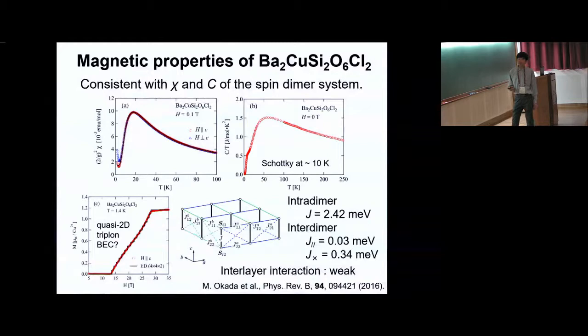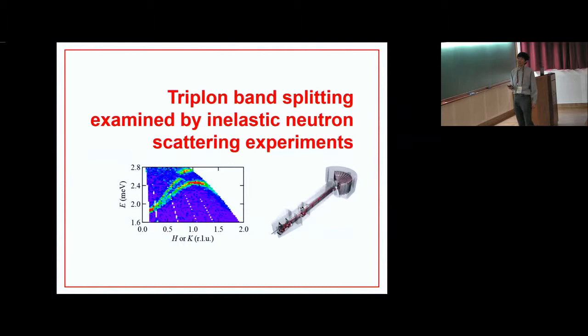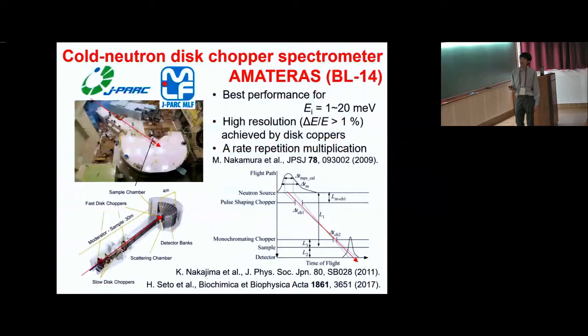Inelastic neutron scattering experiments were originally performed to confirm these expectations experimentally. The experiments were performed at J-PARC using the cold neutron disk chopper spectrometer AMATERAS.